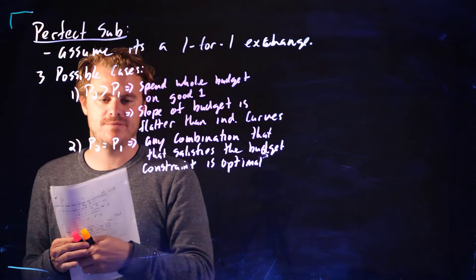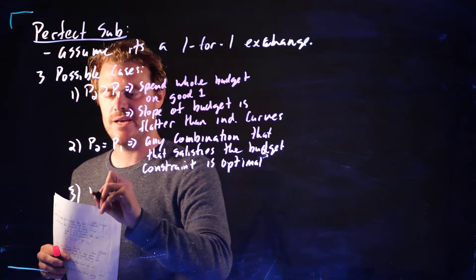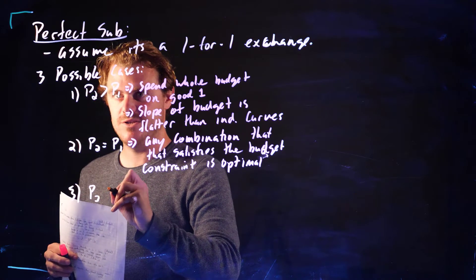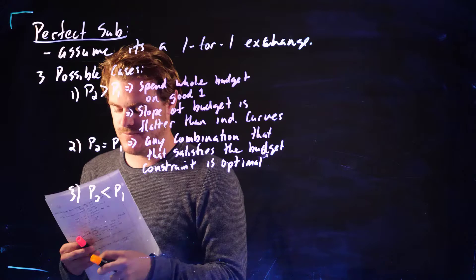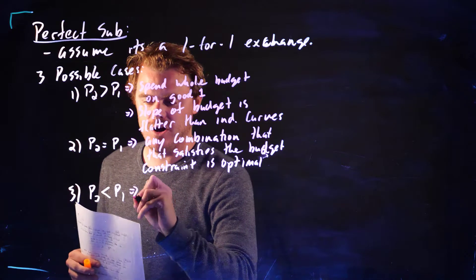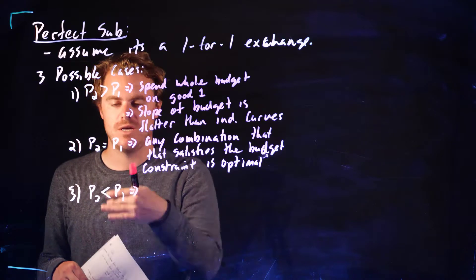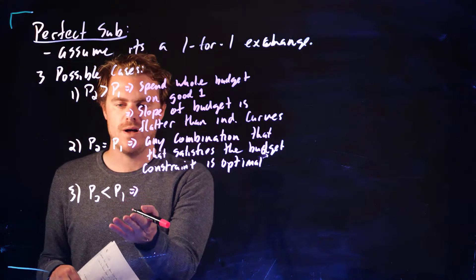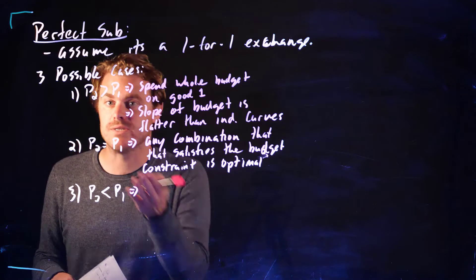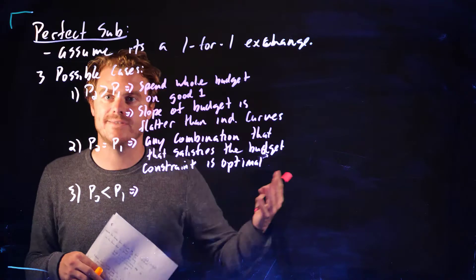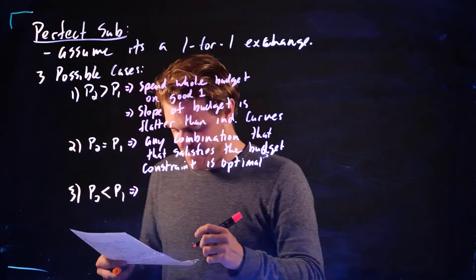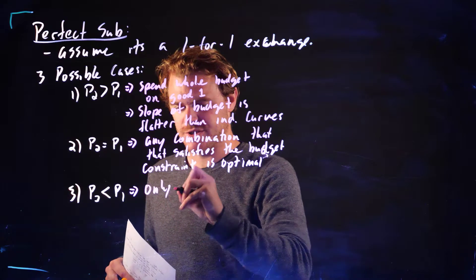And finally, we could have the opposite of this first case where P2 is actually less than P1. Well, now we're going to be spending all of our money on good 2 because we're willing to exchange them one for one and now commodity 2 is just cheaper. So we're just going to buy all commodity 2 because we like it just as much.